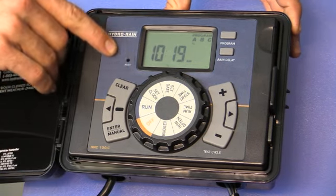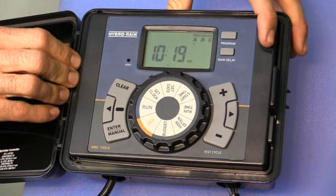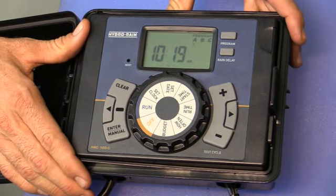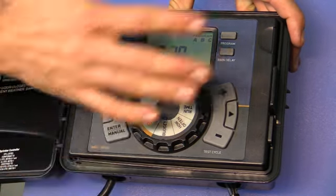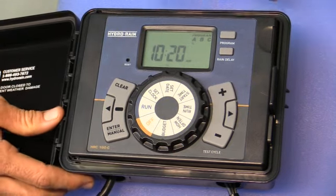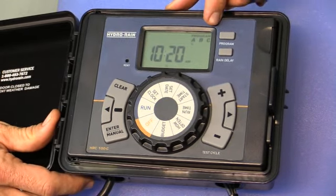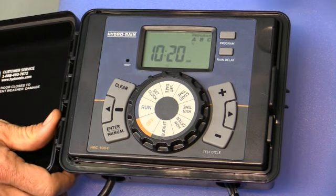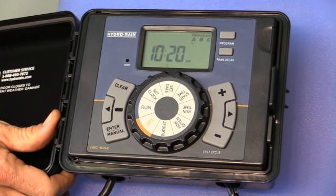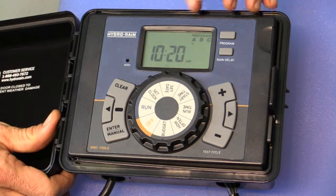To reset, you want to press it here. For rain delay, you can hook a rain sensor up to this. And that's pretty much it as far as the programming. When program A is set, there's also options of B and C. You can have different start times, different run times, different dates of the week, however you want to set this up.